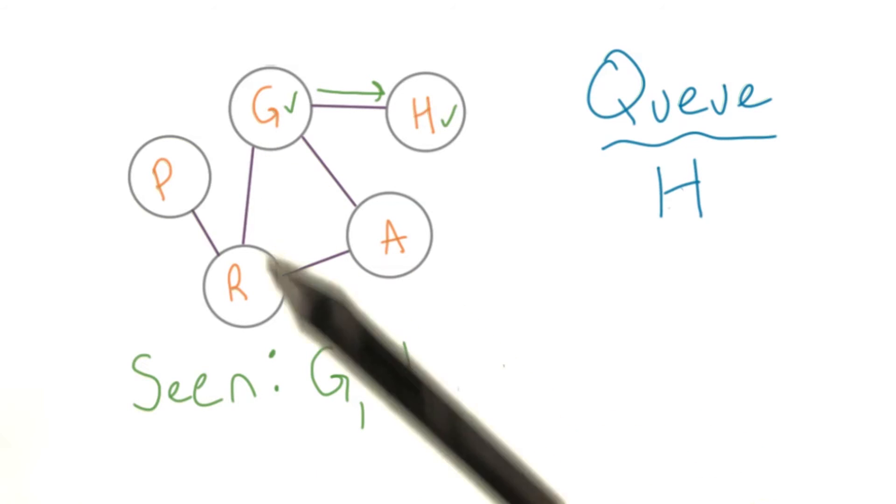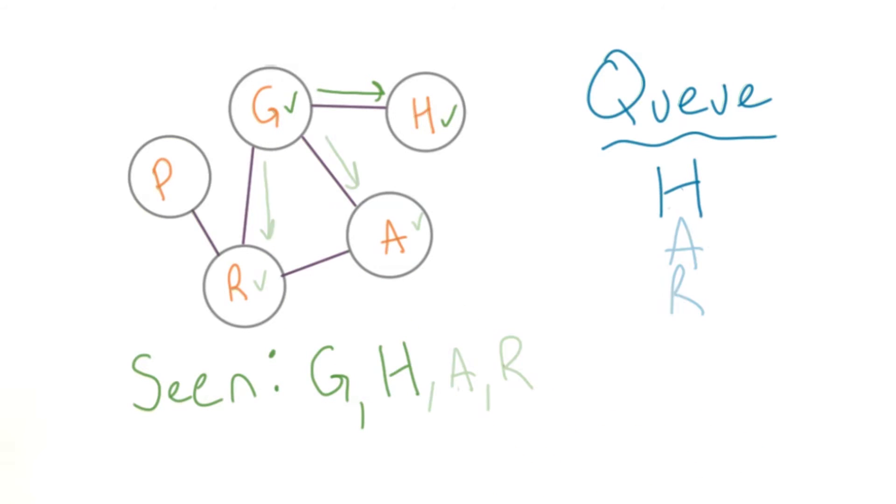We go back to that first node and visit everything adjacent to it, marking each as seen and adding them to a queue.